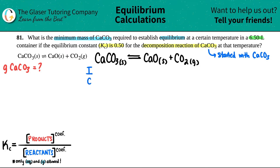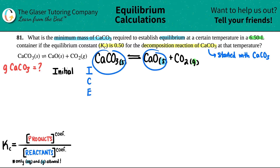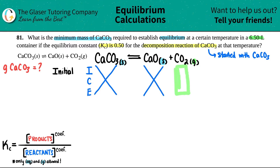So I'm going to write I-C-E. This could also be called a RICE table — the R stands for reaction — but fewer letters, the better. Now, pay attention to the states. CaCO3 is a solid, CaO is a solid, and CO2 is the gas. In order to use the Kc equation, only aqueous and gas species are allowed. So CaCO3 and CaO are solids — I don't need to fill in any information for them. The only column I need to fill in is for CO2.